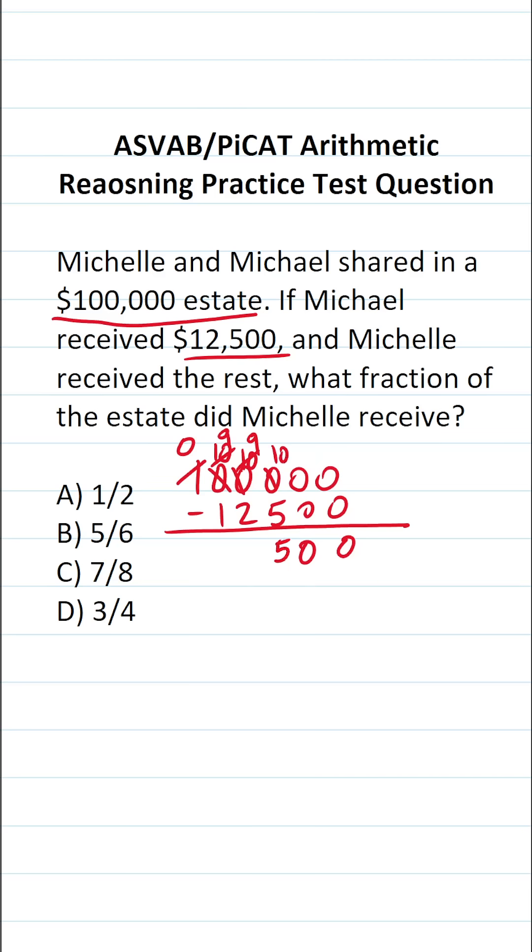10 minus five is five. Nine minus two is going to be seven. Nine minus one is eight. So we can see that Michelle received $87,500 of the $100,000 estate.